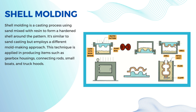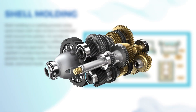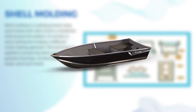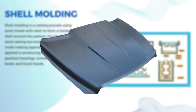Shell molding is a casting process where they make molds from sand mixed with resin to create a hardened shell around the pattern. It's a bit like sand casting, but the mold is made differently. This method is used to make gearbox housing, connecting rods, small boats, and truck hoods.